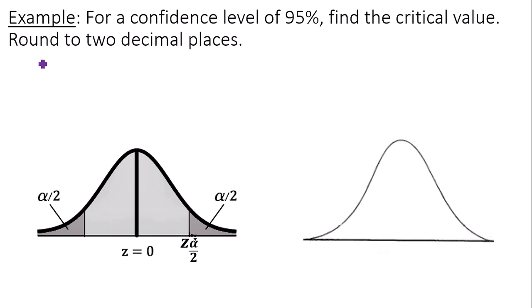Let's start off by finding what is alpha. Alpha is 1 minus the confidence level. In this case, the confidence level is 95% or 0.95. That is 0.05.